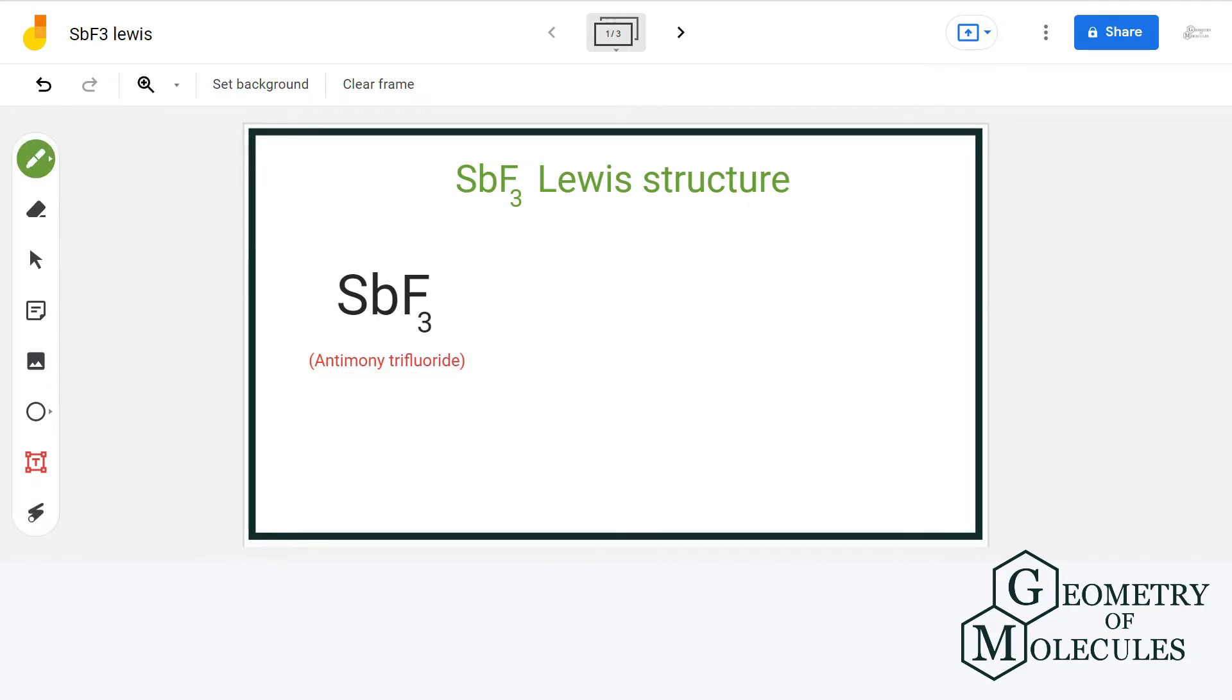To know its Lewis structure, we will first count the total number of valence electrons. We have one antimony atom having 5 valence electrons and 3 fluorine atoms having 7 valence electrons. Now that gives us a total of 26 valence electrons.